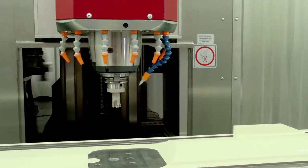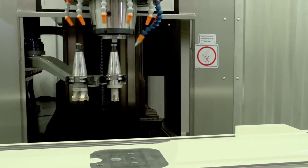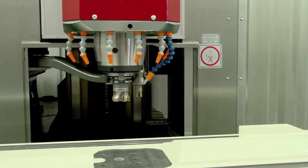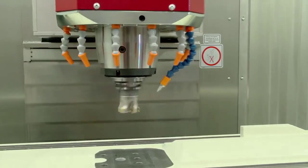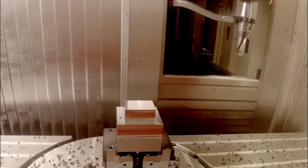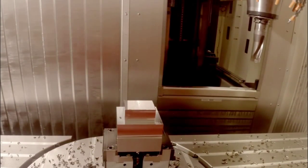The swivel arm tool changer for which a patent has been filed is located on the outside of the machine work area, protected from shavings and splashes by a stainless steel cover and guarantees a short chip-to-chip time.